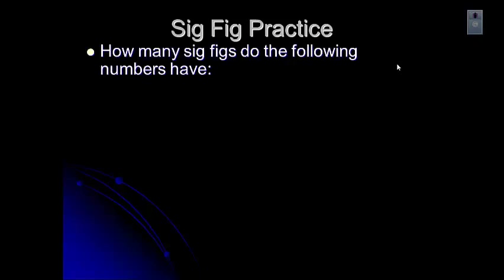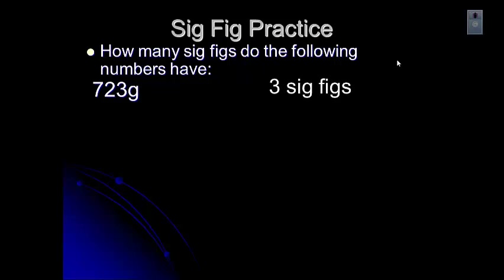Let's try a few practice problems. When I put these up, pause the video, give it a shot, and then look at the answer — and if there's something you don't understand, feel free to ask in class. Tell me how many sig figs each number has. The first number has three sig figs. Rule number one says all non-zero digits are significant, and as you can see, this number has one, two, three non-zero digits.